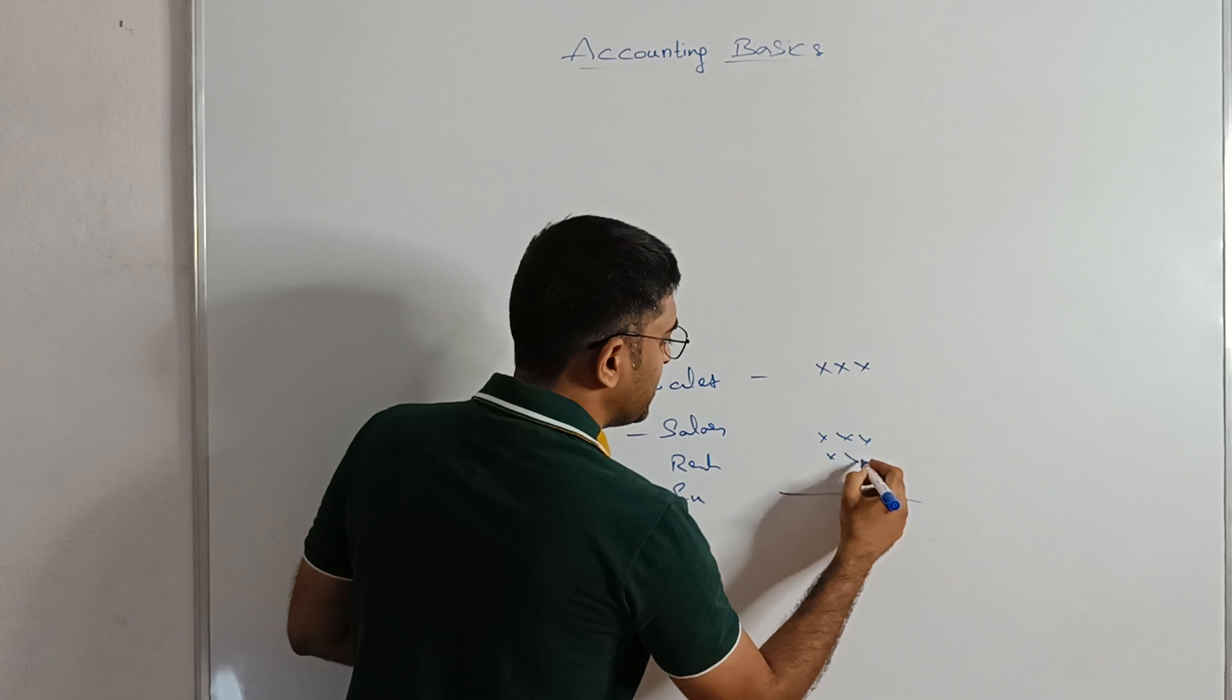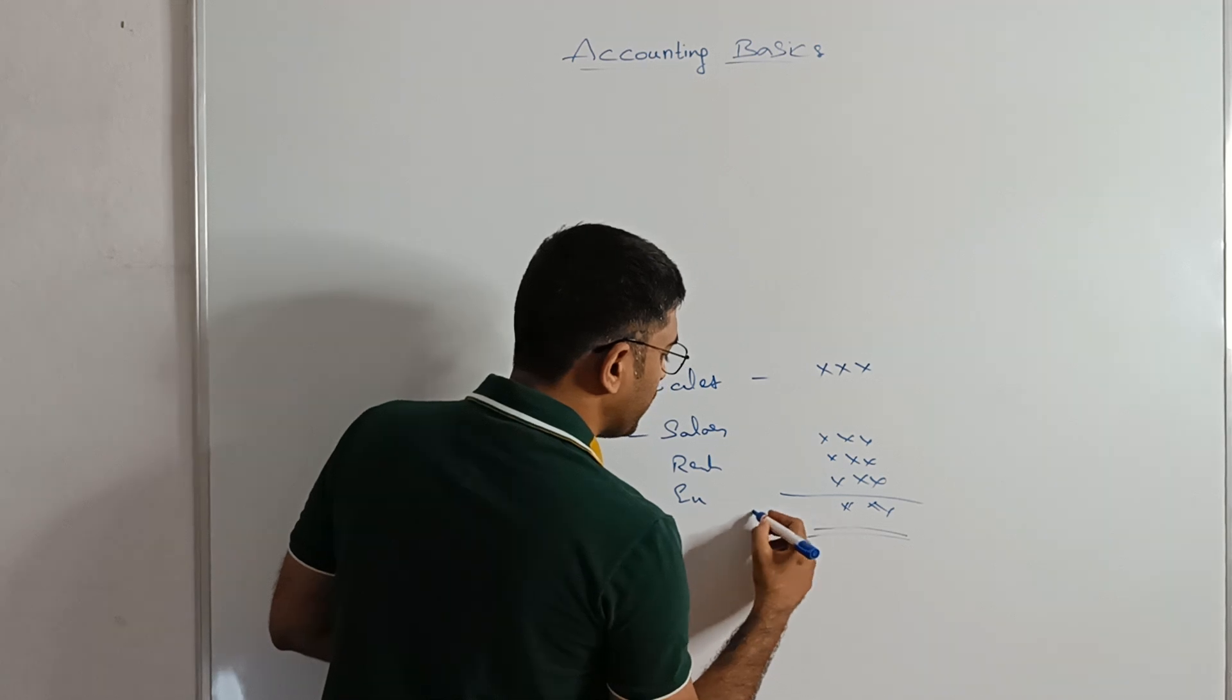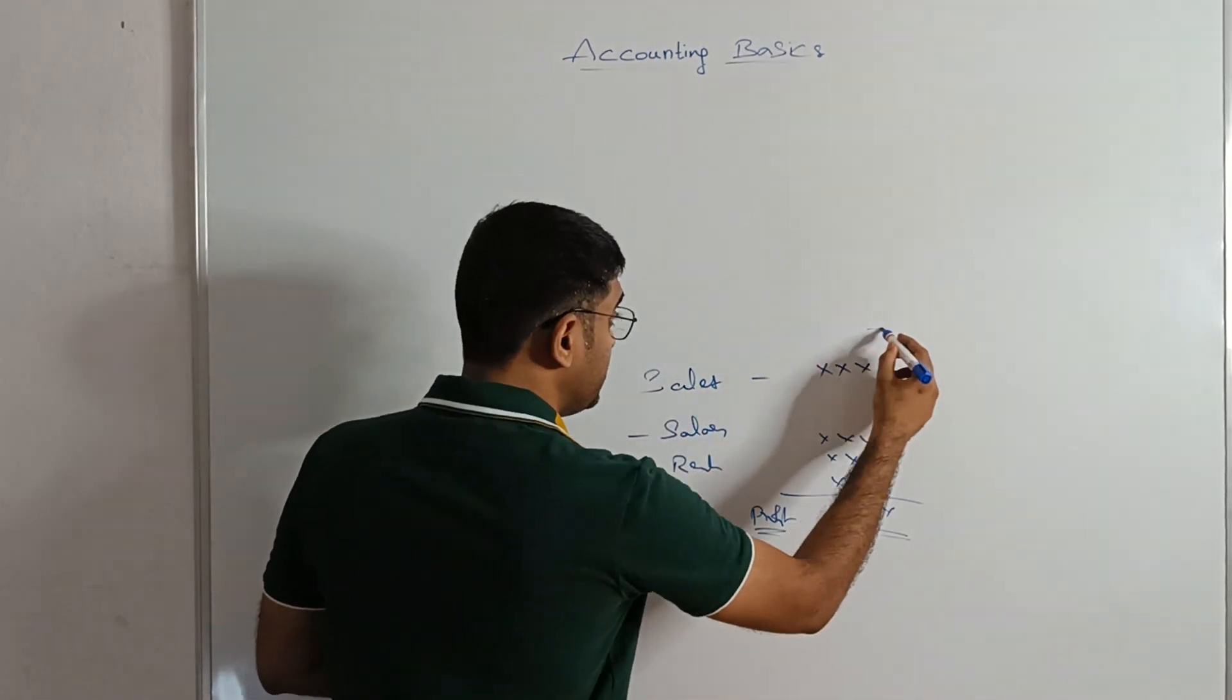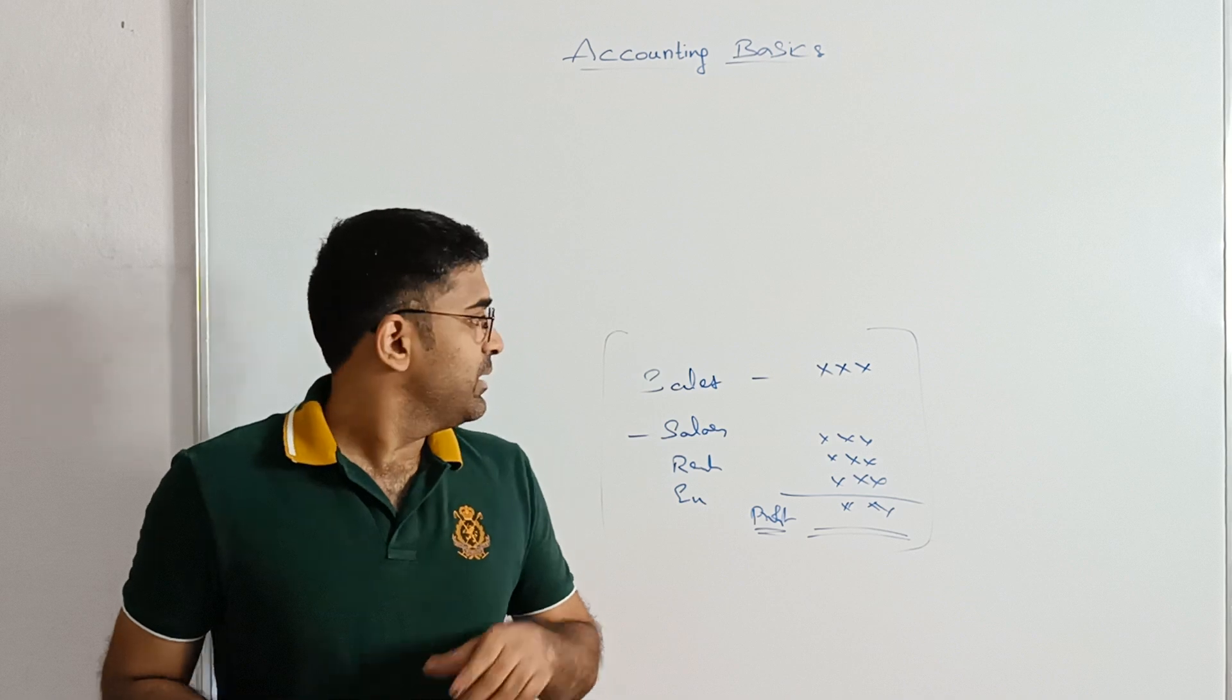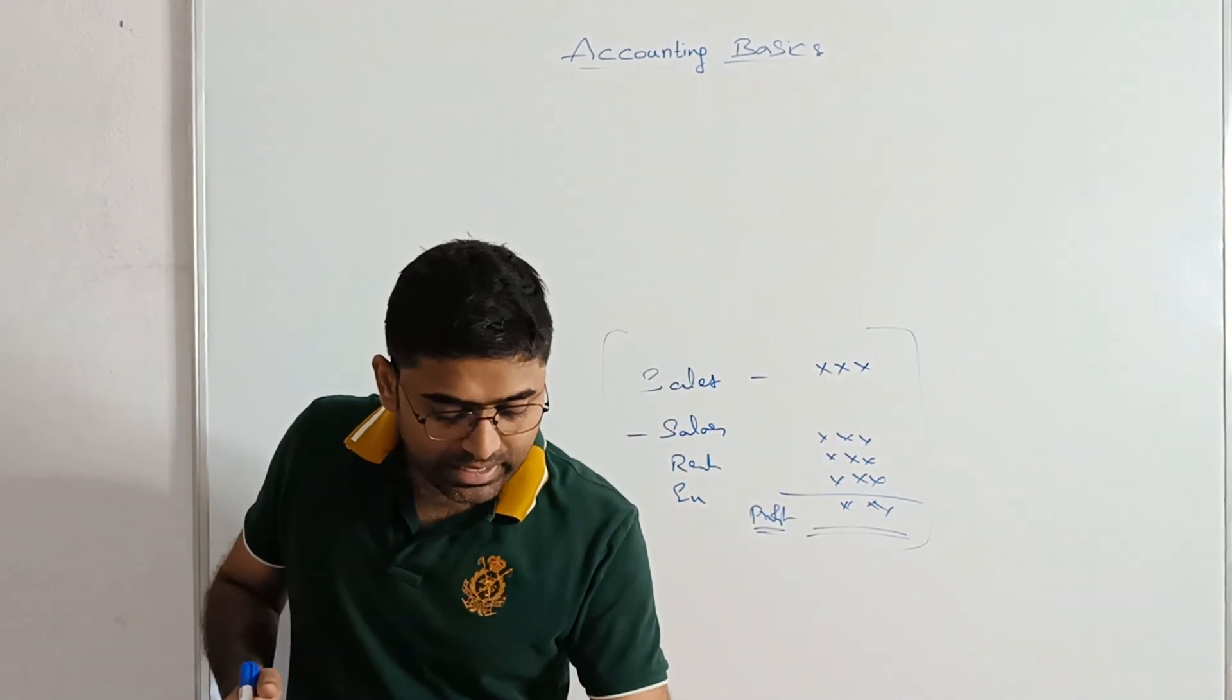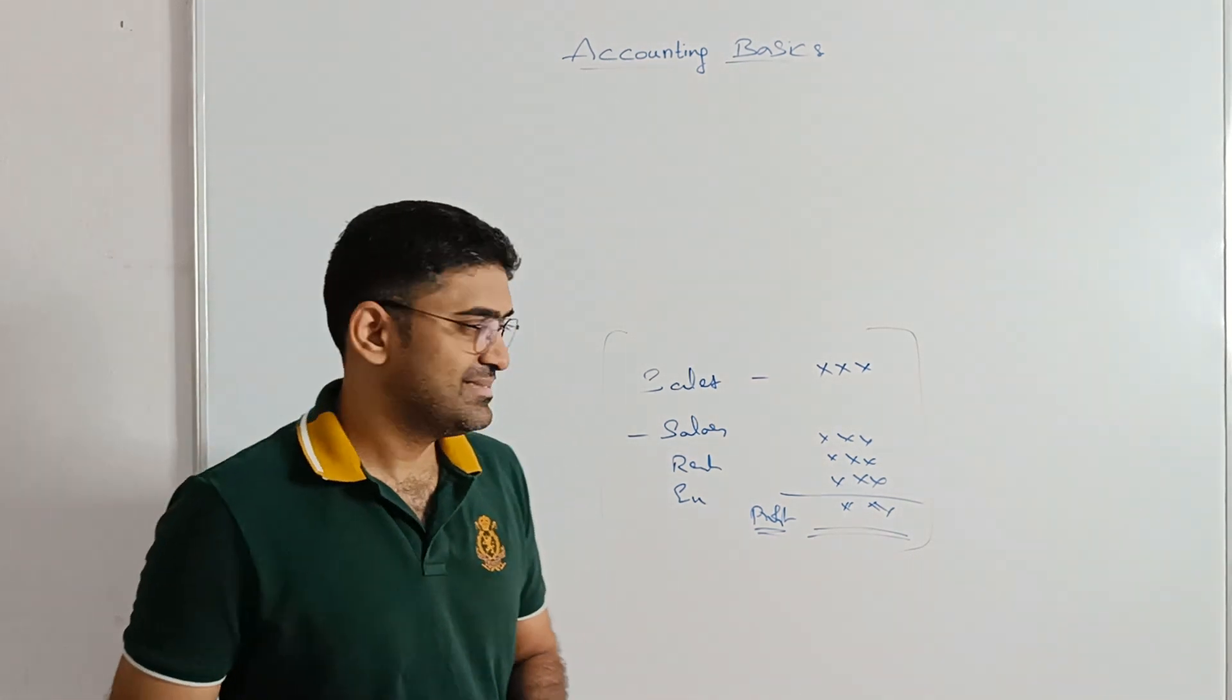Income minus expense. Then you will get the profit. Right? The process of doing this, figuring out what transaction happened in the company, preparing a list of all the transactions is nothing but accounting for you. Okay?